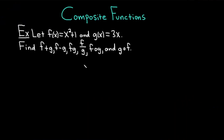Hi, everyone. It's the Mathsorcery here with Chegg. In this video, we're going to discuss composite functions. In our example, we have two functions: let f of x equal x squared plus 1 and g of x equals 3x. We have to find f plus g, f minus g, f times g, f over g, and then the function compositions f∘g and g∘f.